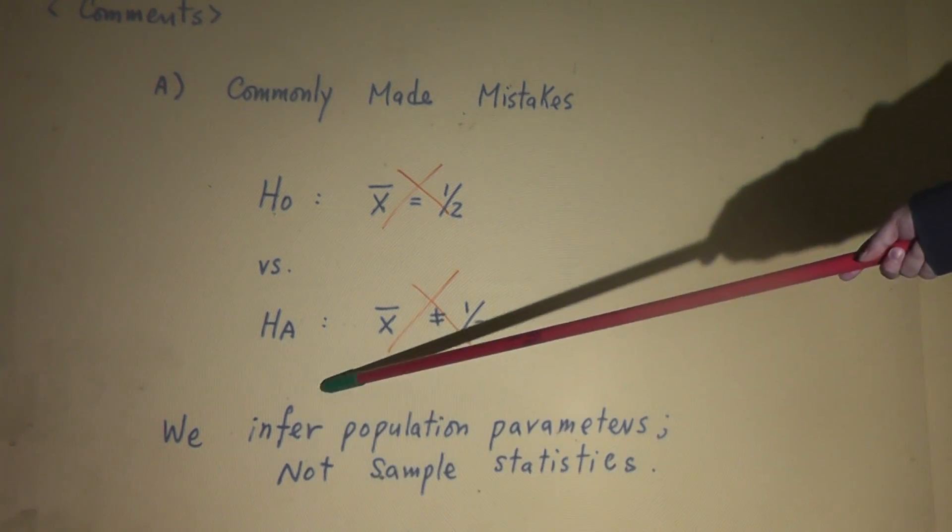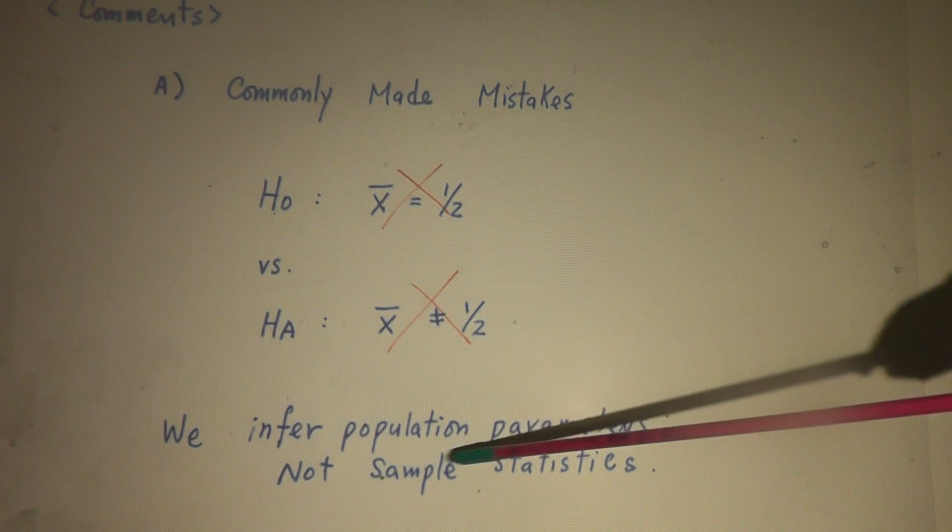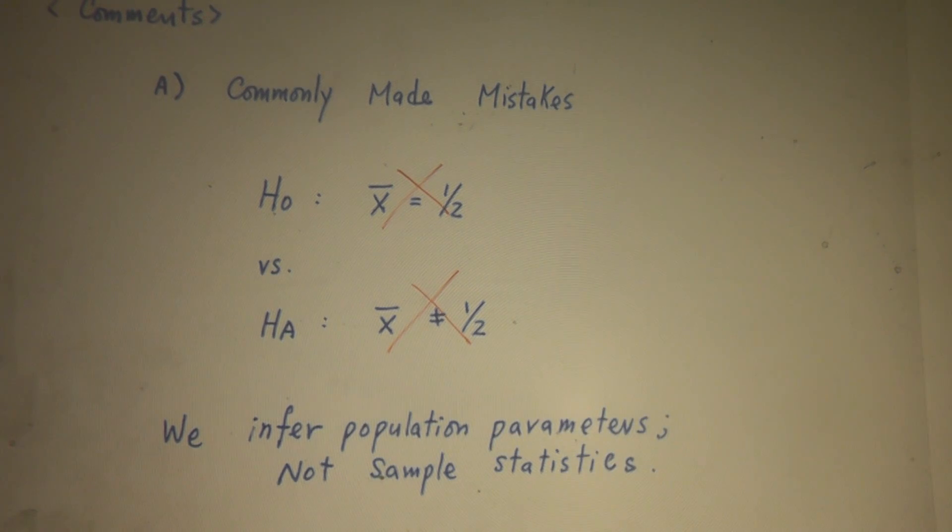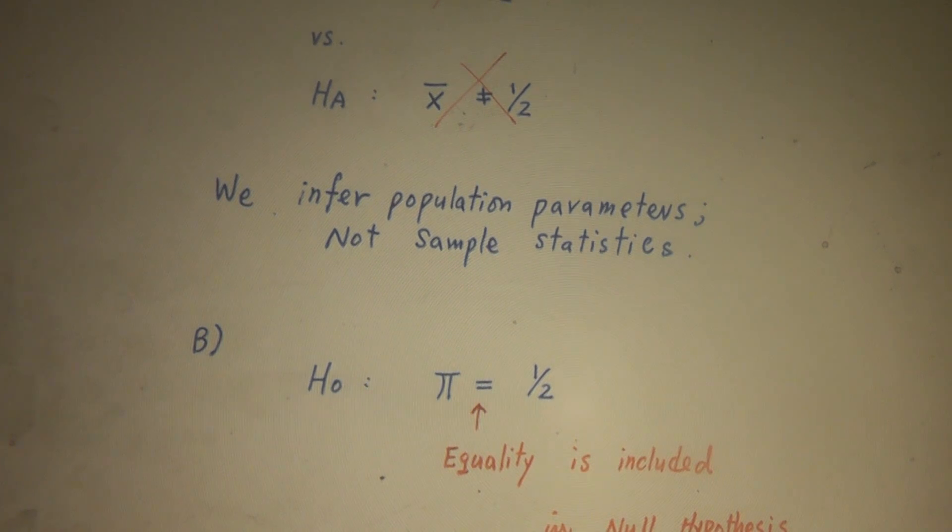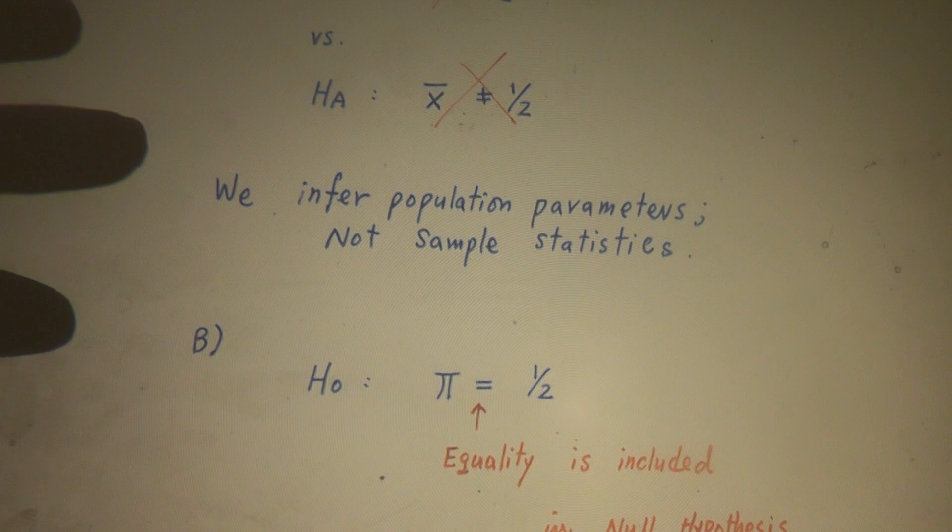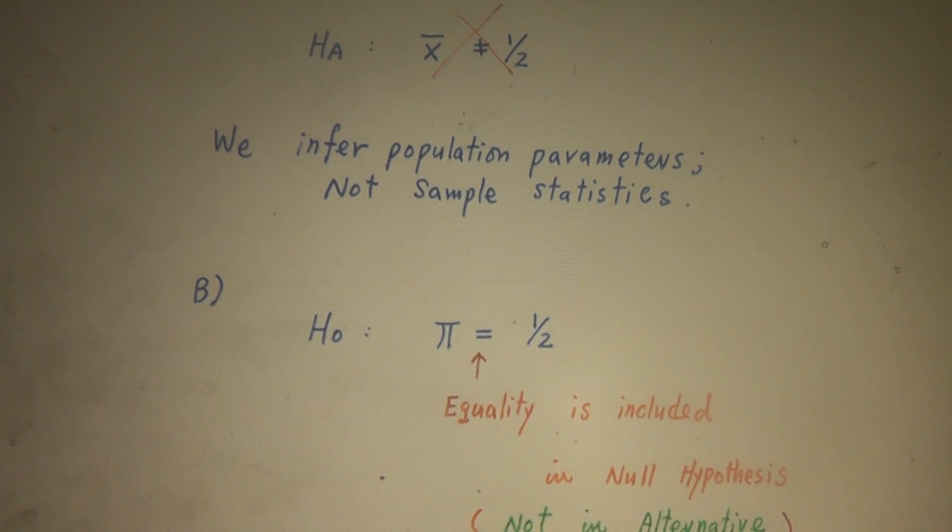When we make statistical inference, we make inference on population parameters, not sample statistics. Because when you flip the coin a hundred times, you can get 50 heads, that is 50%. If you get 60 heads, that's 60%. If you get 40 heads, that's 40%. It changes all the time. It's not a fixed number. So we want to test population parameters, not sample statistics.